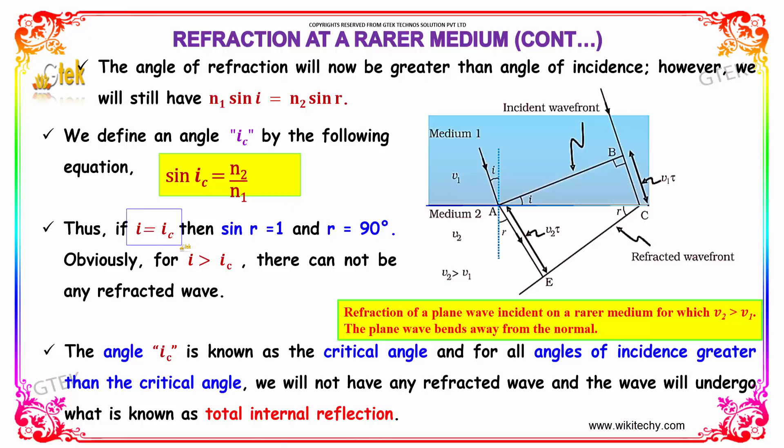Thus, if i equals ic, then sin r equals 1 and r equals 90 degrees. Obviously, for i greater than ic, there cannot be any refracted wave.